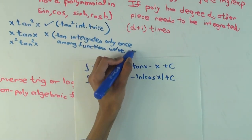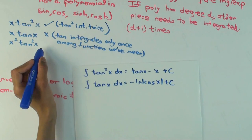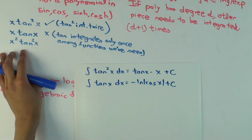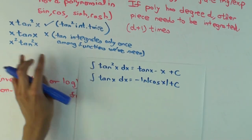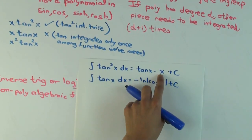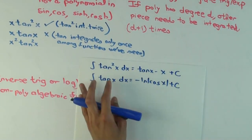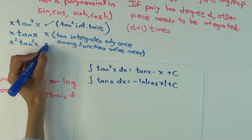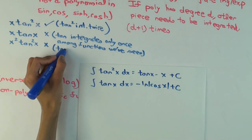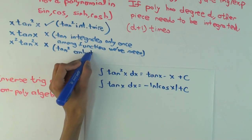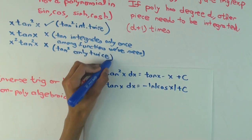We could introduce a new name for such functions. What about x²·tan²x? How many times would you need to be able to integrate tan² to do this? Thrice. The first time you integrate, you get tan x minus x; the second time you can still integrate. But can you integrate tan² a third time? No. So this is again no, because tan² integrates only twice, and we need three times.